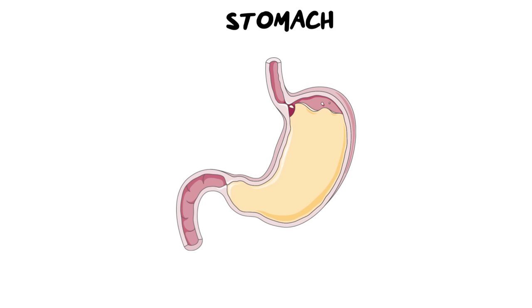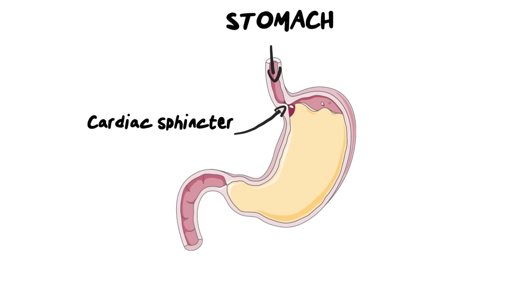We are now at our final destination organ for this video — the stomach. Food has moved down the esophagus and we're approaching the stomach. To keep the bolus in the stomach and prevent it going back up, we have a sphincter muscle at the opening called the cardiac sphincter — it gets its name because it's closer to the heart. There's another sphincter lower down called the pyloric sphincter, which opens and closes between the stomach and the small intestine to make sure food doesn't leave too soon before digestion has taken place.